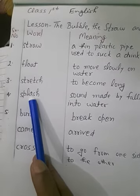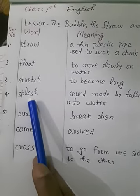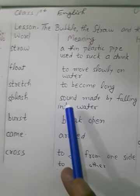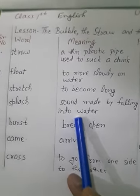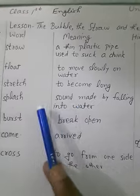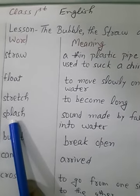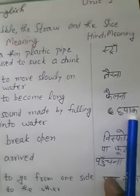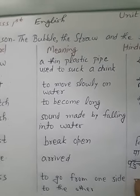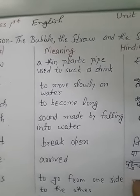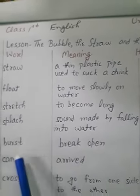Number four is 'splash.' S-P-L-A-S-H. Splash is a sound made by falling into water. In the story, when the Shoe fell into the river, it fell into the water with the sound of splash.